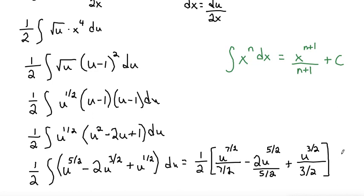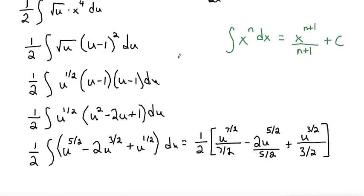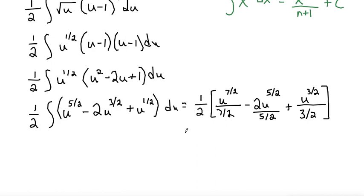And now technically it's a plus c, but I'll go ahead and simplify and then re-sub in my variable, my original variable before I add the plus c. So, to simplify, when we have a fraction on the bottom, we can flip it and multiply. So, that'll make 1 half times 2 sevenths or 2 u to the 7 halves over 7 minus, that'll be 2 times 2 is 4, 4u to the 5 halves over 5 plus, flip that over makes 2 thirds, 2u to the 3 halves over 3.